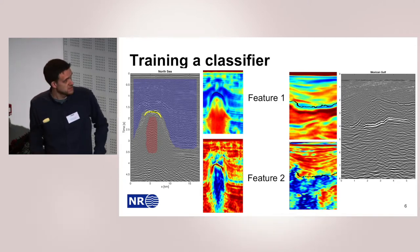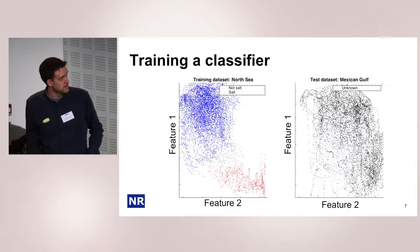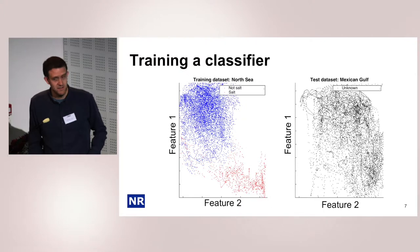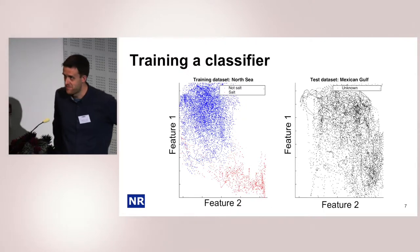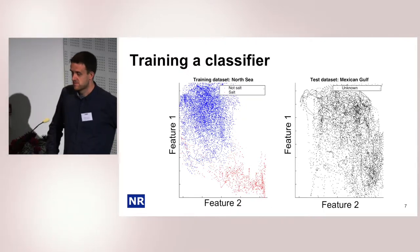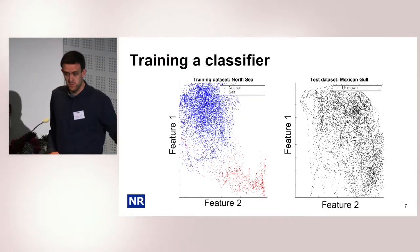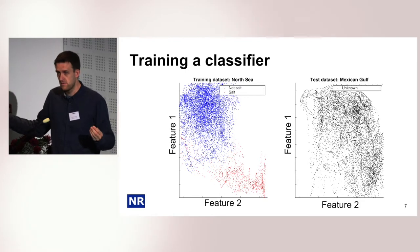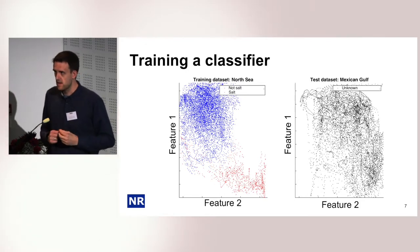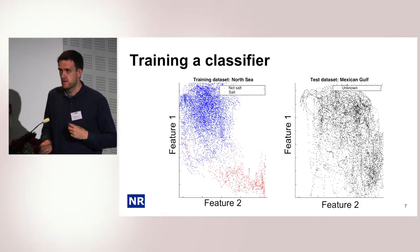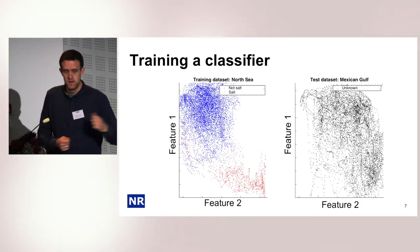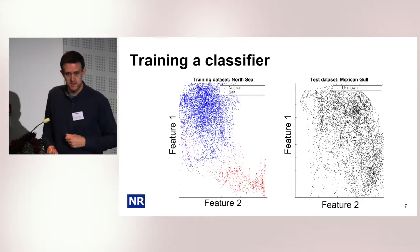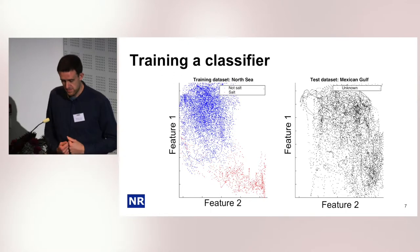The simplest case we have here is linear regression. We have a lot of samples where we know the input value and the output value, and we're trying to figure out what connects the input and the output.